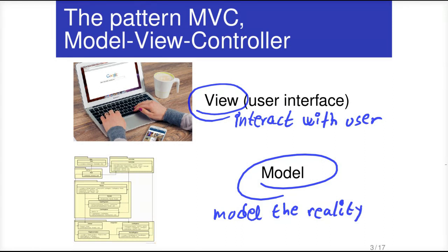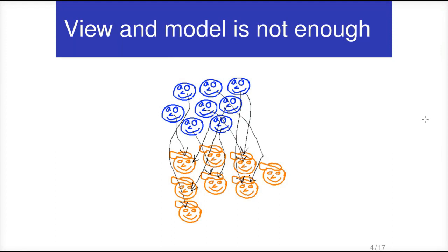And that is what the MVC pattern tells us, to split the program into these two different layers. Fine, but that's not enough. There is another component here, the controller. And to realize the need of the controller, I will try to show what would happen if there was no controller. So I will try to explain this with the help of an analogy.